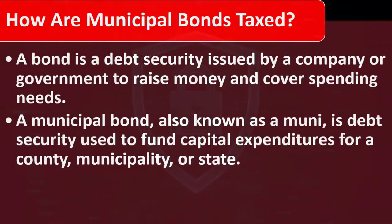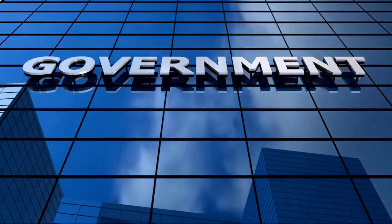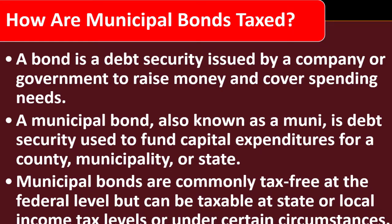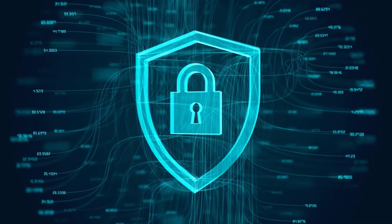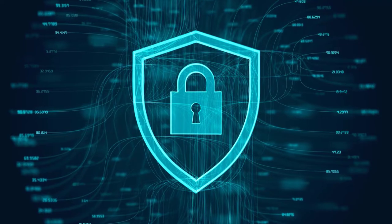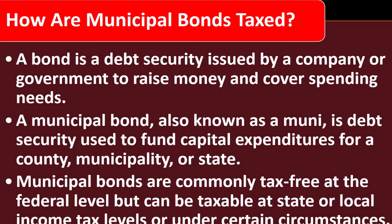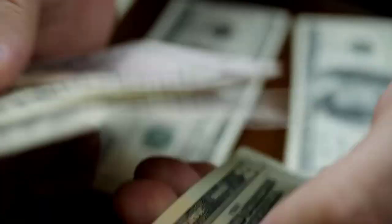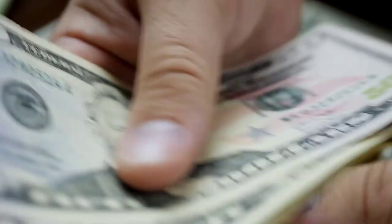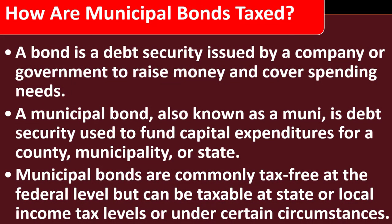A municipal bond, also known as a muni, is a debt security used to fund capital expenditures for a county, municipality, or state. These are government bonds but specifically for counties, municipalities, and states — possibly not as secure as federal bonds, since U.S. government bonds are backed by the federal government with its printing press. State and county bonds are still generally considered more secure than equities, though it depends on the specific county, municipality, or state.